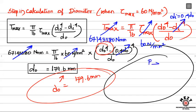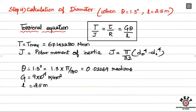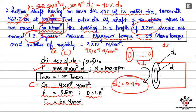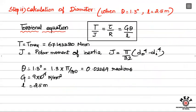That is the first method — using the power equation and shear stress condition gives D₀ = 171.2 mm. Now the second method uses the torsional equation T/J = Gθ/L. Here T is the maximum torque, J is the polar moment of inertia, G is the modulus of rigidity, θ is the angle of twist, and L is the length.